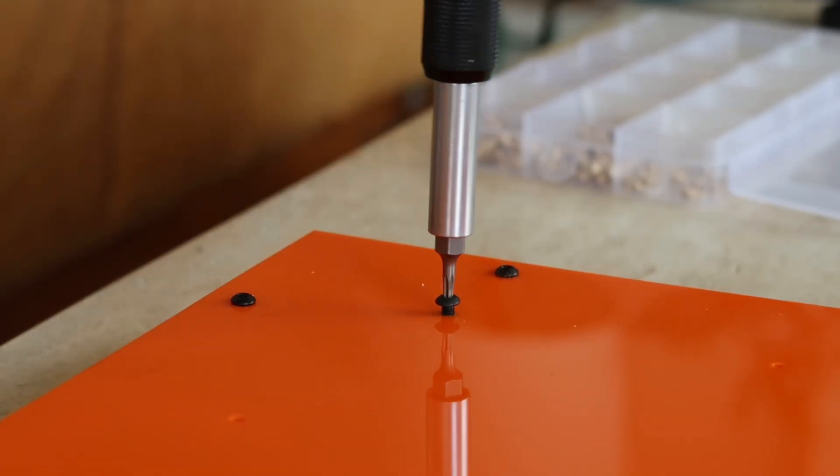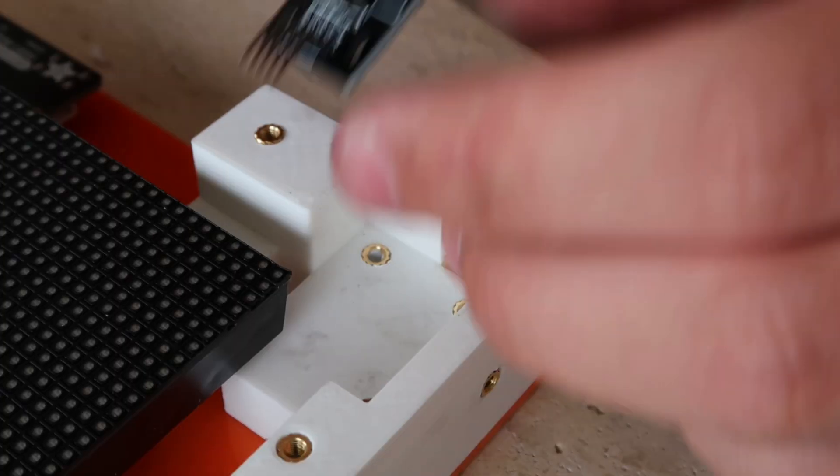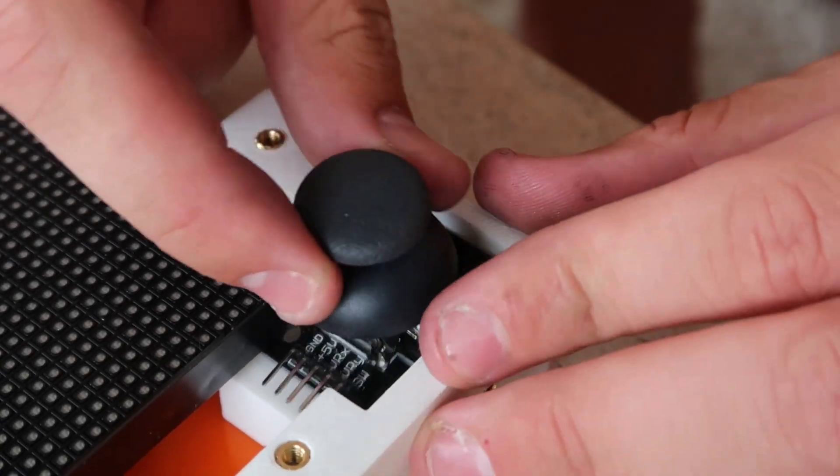Originally, I was going to have the casing be made of stainless steel or aluminum. But then they quoted me at like 300 bucks. And so acrylic seems a lot nicer at that point. And I do love this orange color.